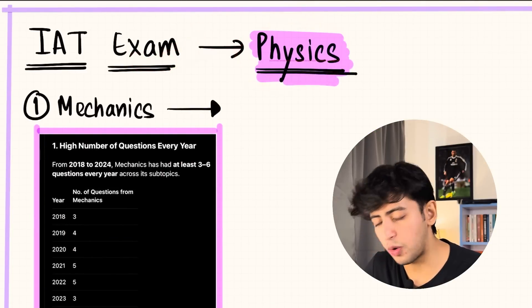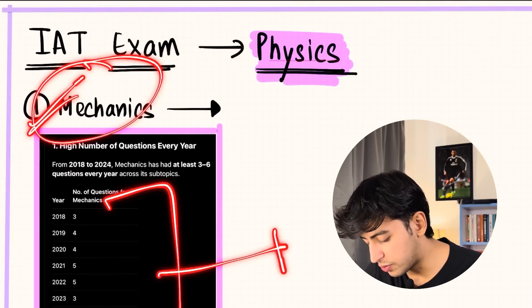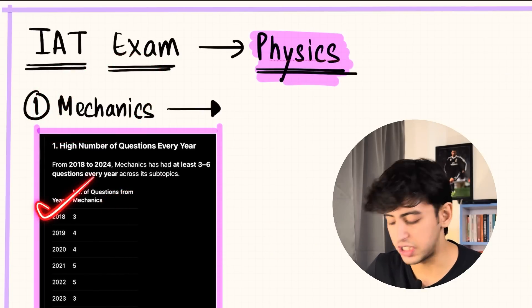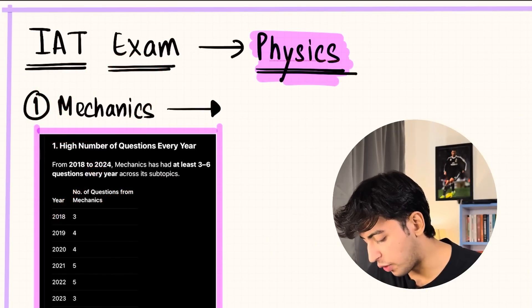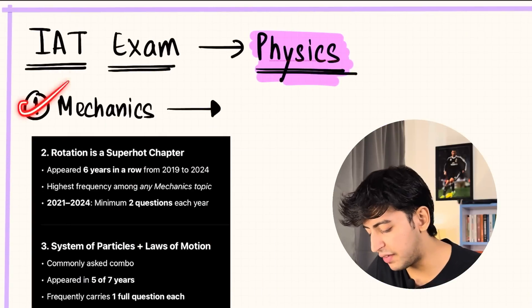Starting off with physics, the single-handedly most important topic is mechanics. You can see every year at least three questions from 2018 to 2024, and 2021 or 2022 may have five questions. It's a very high weightage topic.